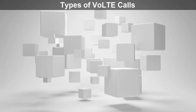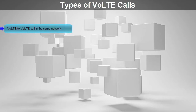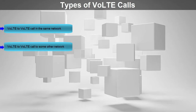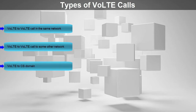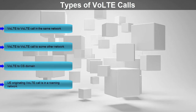What are the various kinds of VoLTE calls you can think of? Let me write down the list. Number one, VoLTE to VoLTE call in the same network — in this case, the called party is VoLTE enabled and belongs to the same operator. Number two, VoLTE to VoLTE call to some other network — the called party is VoLTE enabled but belongs to some other operator. Number three, VoLTE to CS domain — the called party is present in the CS domain. And lastly, when the UE making the VoLTE call is present in a roaming network. Let's move on and discuss each case one by one.